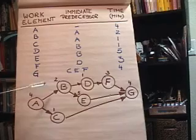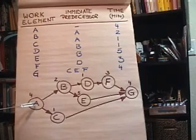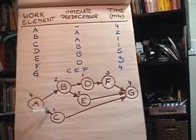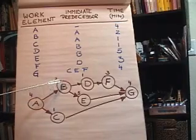So the nodes represent the work elements themselves and the arcs just represent the precedence relationships. For example, B is coming out of A, C is coming out of A.